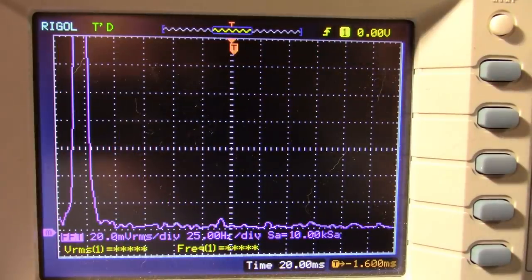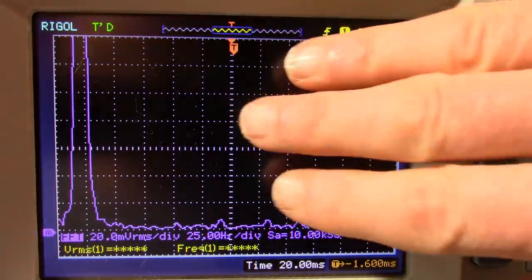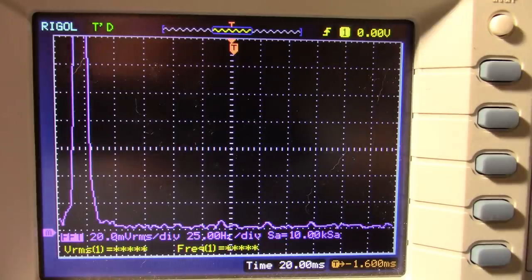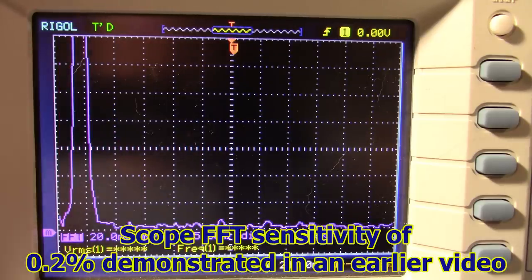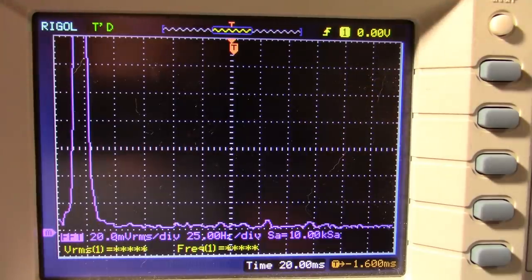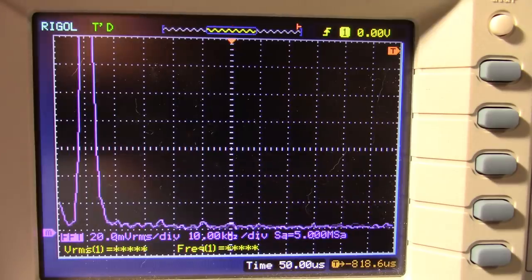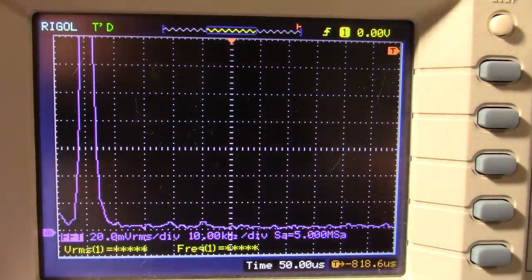This is the distortion at 20 hertz and there's really nothing here. Keep in mind my oscilloscope can only measure down to about 0.2%. It's an 8-bit scope. Figuring in oversampling I can see about 0.2%. It's not really a hi-fi measurement device but it's good enough to tell me that there's no issues with this amplifier. Now I'm at 10 kilohertz and it's just noise floor. No real distortion issues.